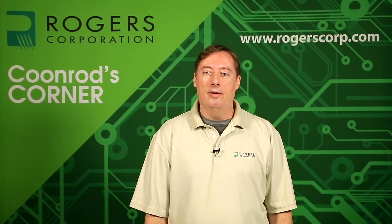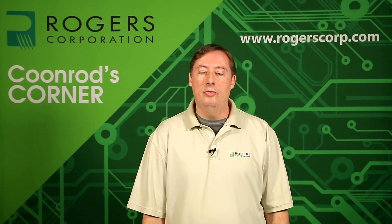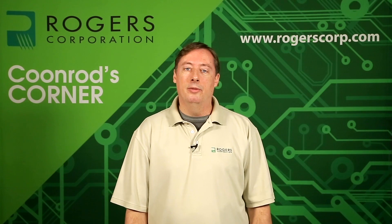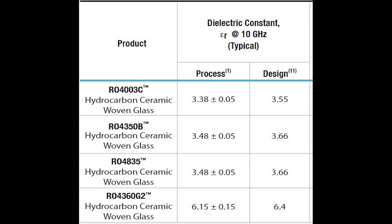The Rogers website, data sheets, and product selector guides have two columns for dielectric constant: process dielectric constant and design dielectric constant. Process dielectric constant, or process DK, is the value obtained by testing the raw substrate using an industry standard IPC test method — specifically IPC-TM-2.5.5.5.5.5.5C — which is a clamp stripline test. This test is used for process control and quality control, and thus the term process dielectric constant.